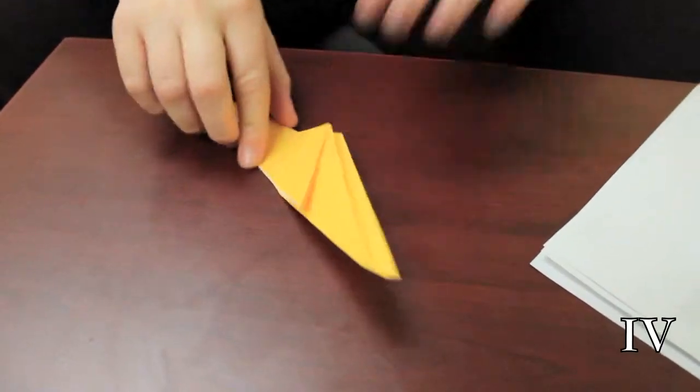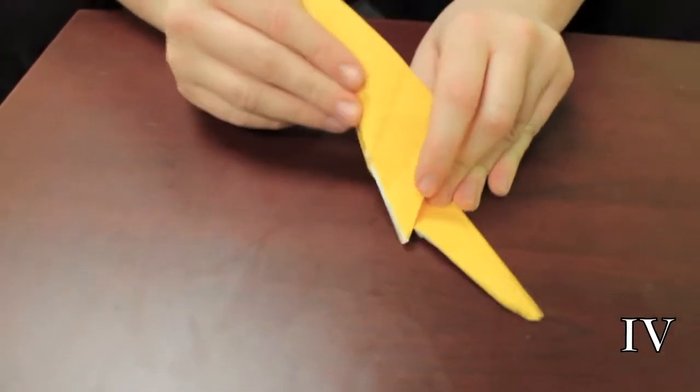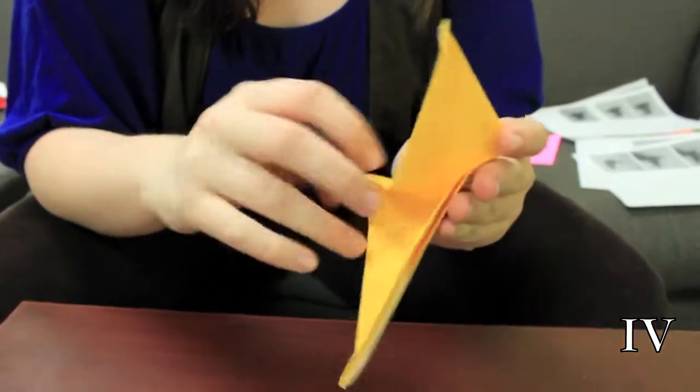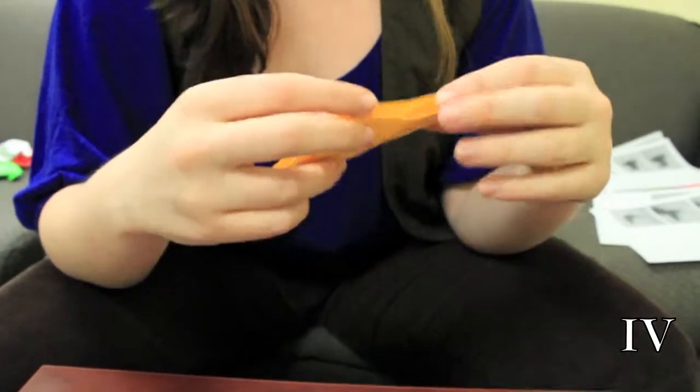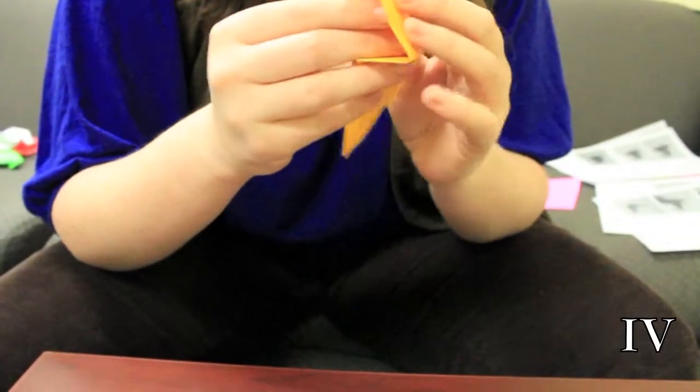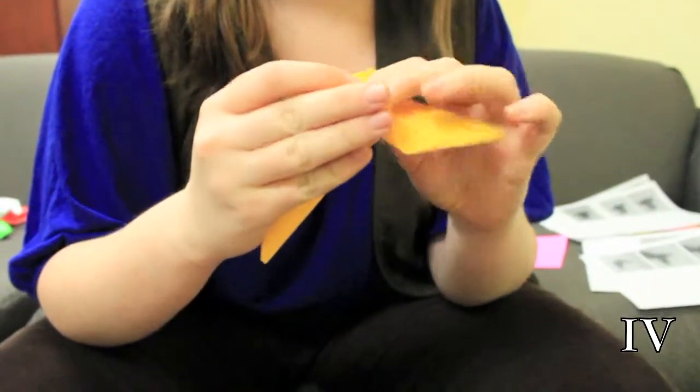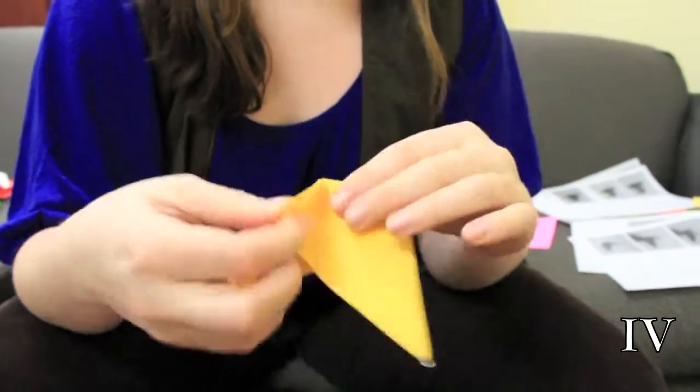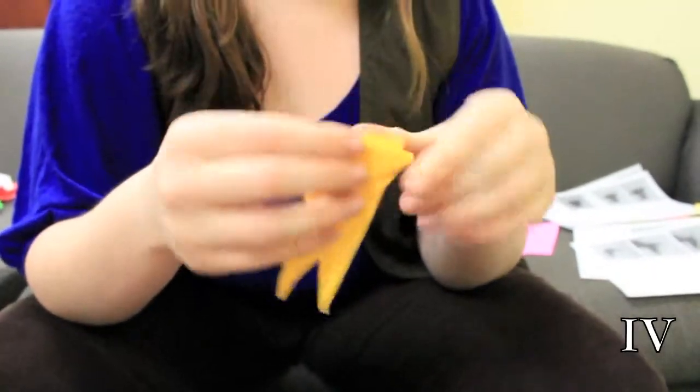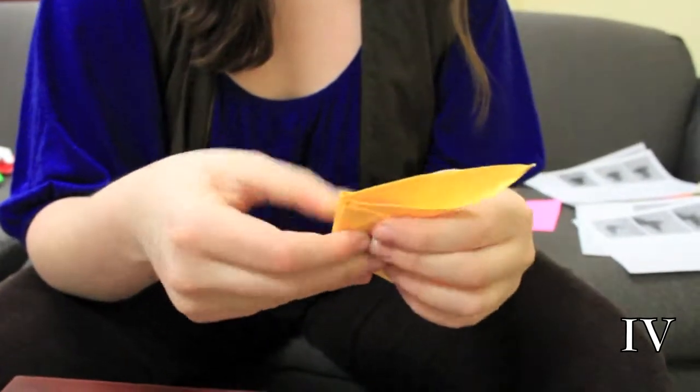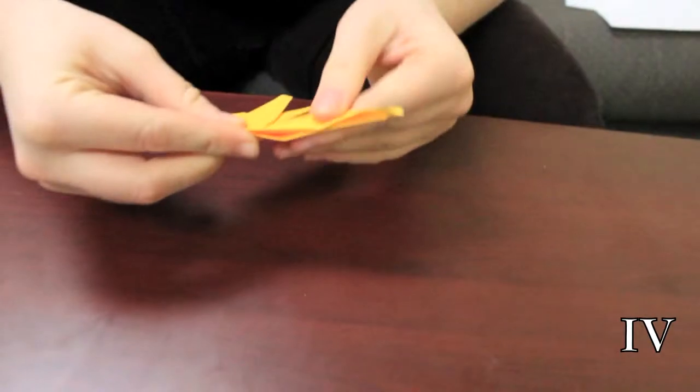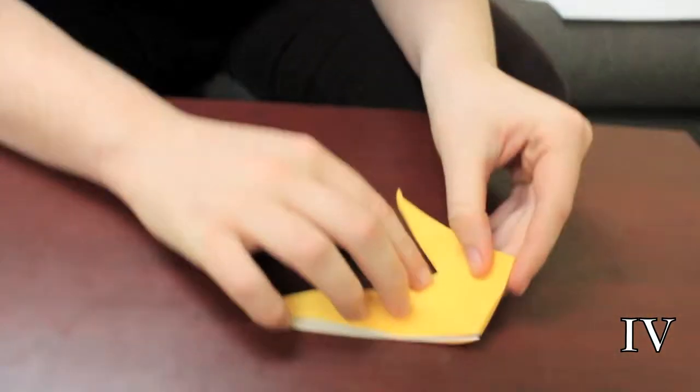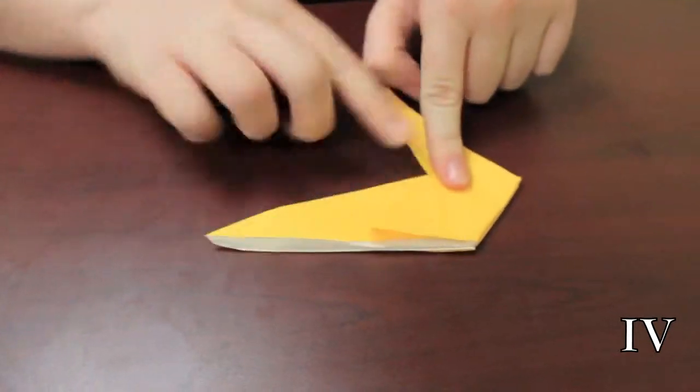You uncrease it here. Then what you do is you take it and you fold it up. And you want to make sure you stay along the crease that you created. So it should look along the line so you have a diamond-ish figure here. You have a triangle up here and a triangle up here.